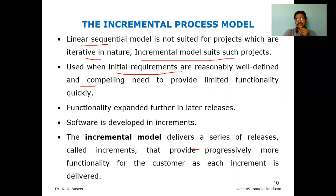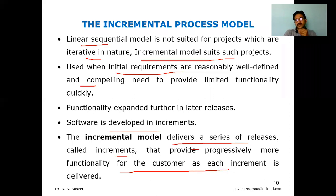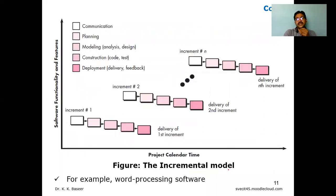The requirement phase is initially well-defined and limited functionality is delivered quickly. This functionality can be refined in later releases, because each iteration releases an increment. If the customer is not satisfied with that increment, changes can be made in the second iteration. Software is developed in the form of increments — it delivers a series of releases, each called an increment, providing progressively more functionality.